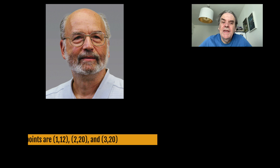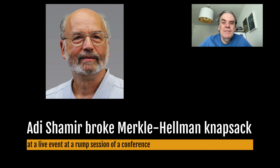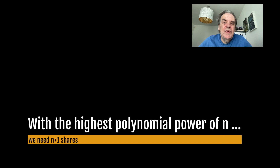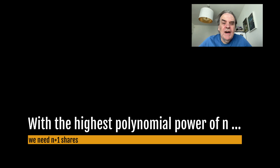Adi Shamir actually broke the Merkle-Hellman knapsack method at a live event at a rump session of a conference. With secret shares, with the highest polynomial of n, we need n+1 points to come together to be able to regenerate a secret. For example, y = 2x + 5 needs two points to come together, while y = x² + 15x + 4 needs three points.